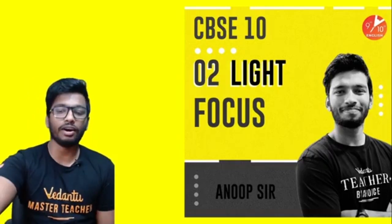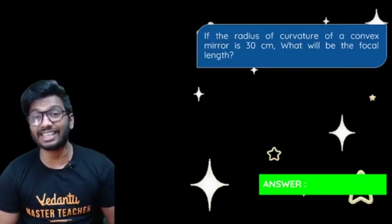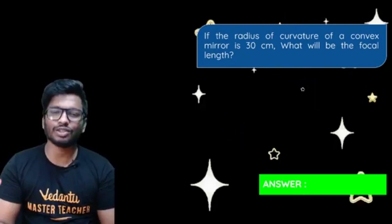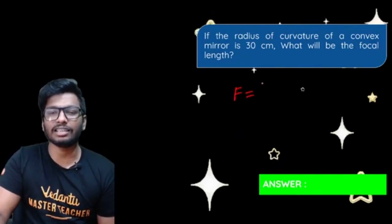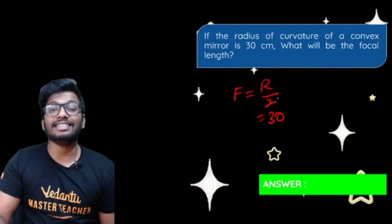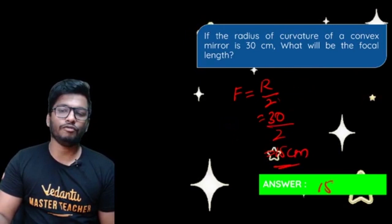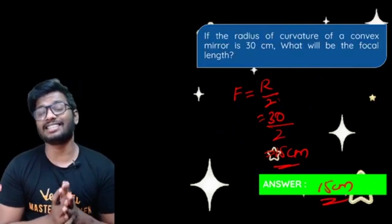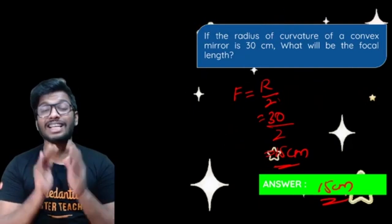In the last session on focus, I had given you a homework: if the radius of curvature of a convex mirror is 30 centimeters, what will be the focal length? The formula is focal length equals R by 2, so 30 divided by 2 gives 15 centimeters. That is the answer — 15 centimeters. Do not ever forget this formula.